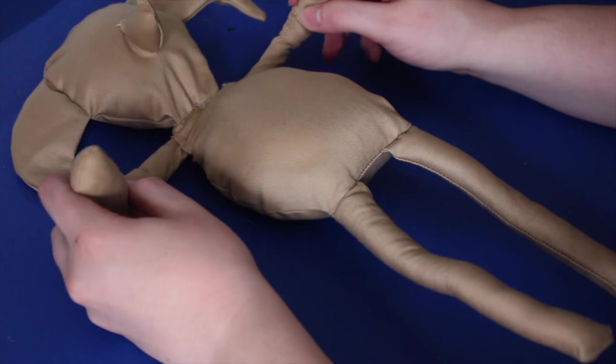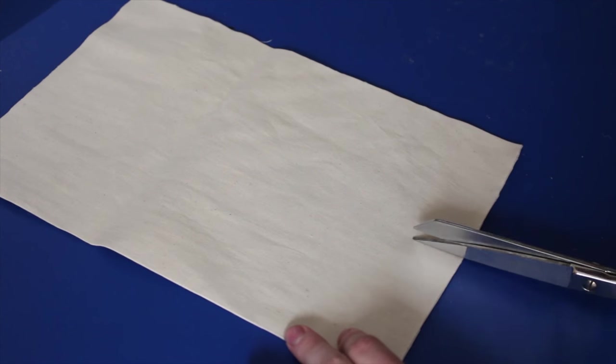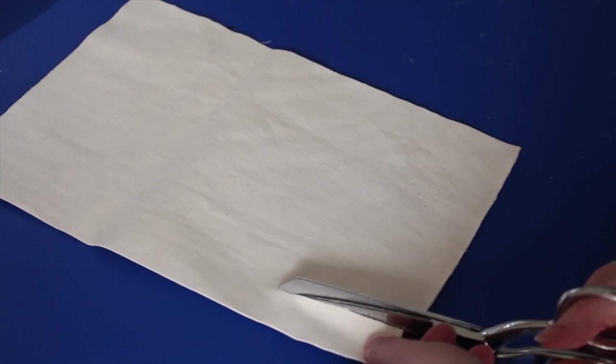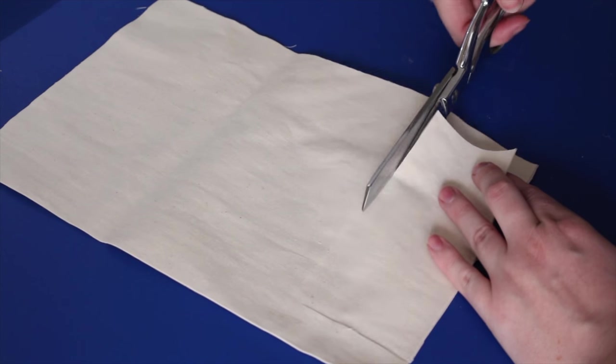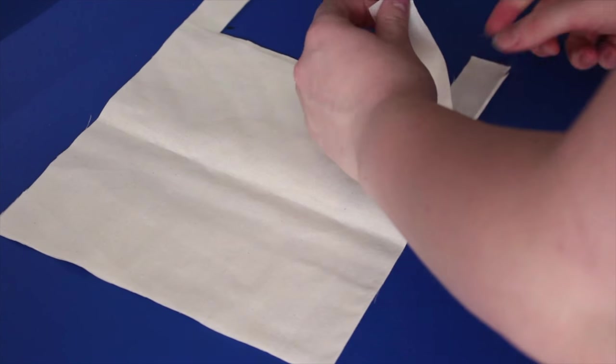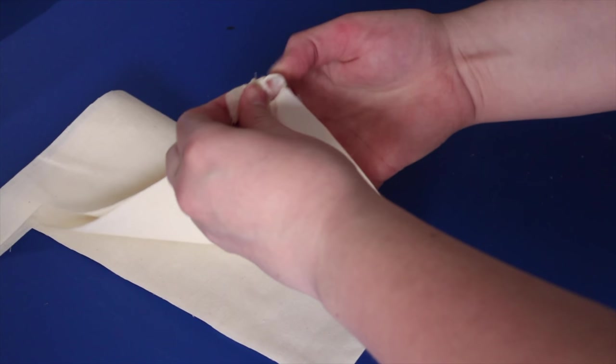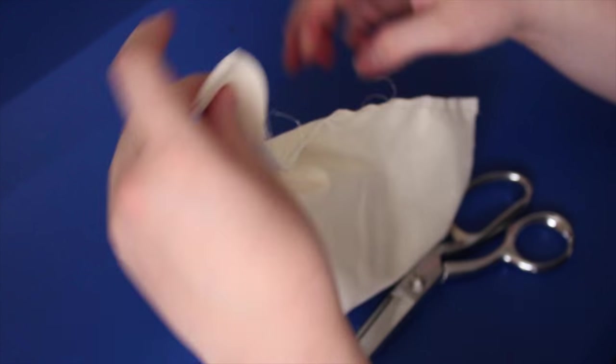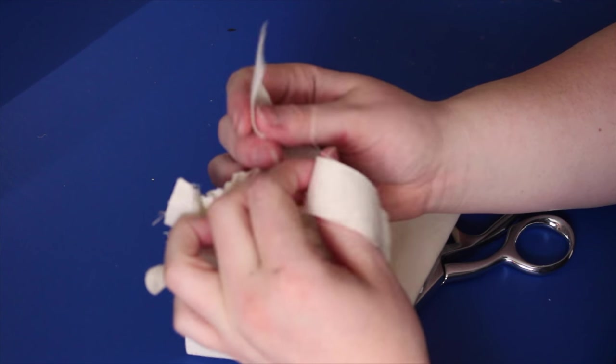Now let's make Dobby's outfit. I'm cutting out a long rectangle and then another rectangle here. I sewed up the side and now I'm finishing by tying it at the top. Then it goes over Dobby's head.